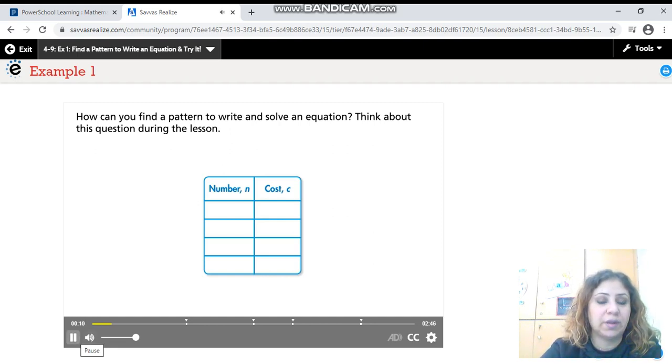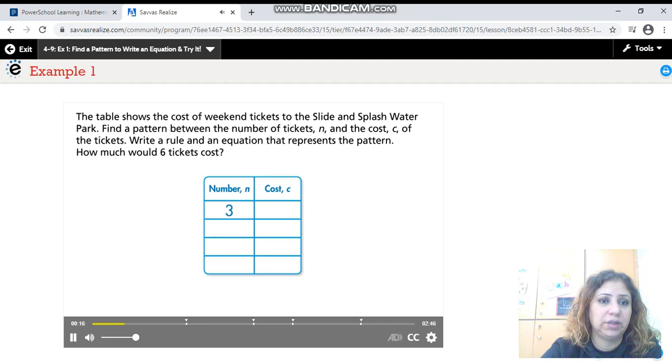Here is a table that shows a number N and the cost C. We need to find a pattern to write and solve an equation. The table shows the cost of weekend tickets to the Slide and Splash water park. Find a pattern between the number of tickets and the cost C of the tickets. Write a rule and an equation that represents the pattern. How much would six tickets cost?